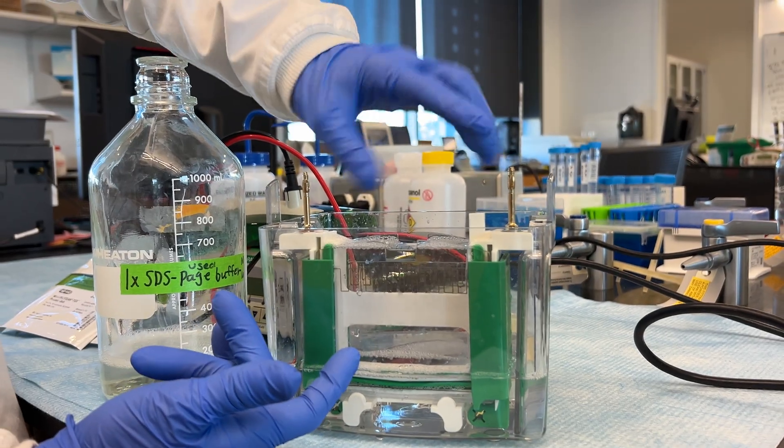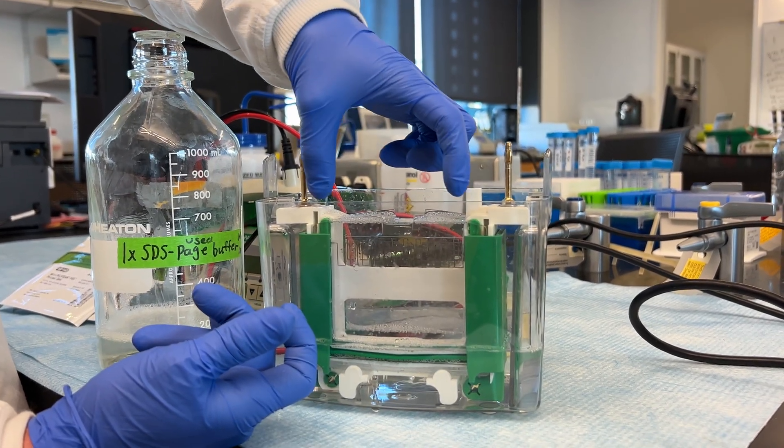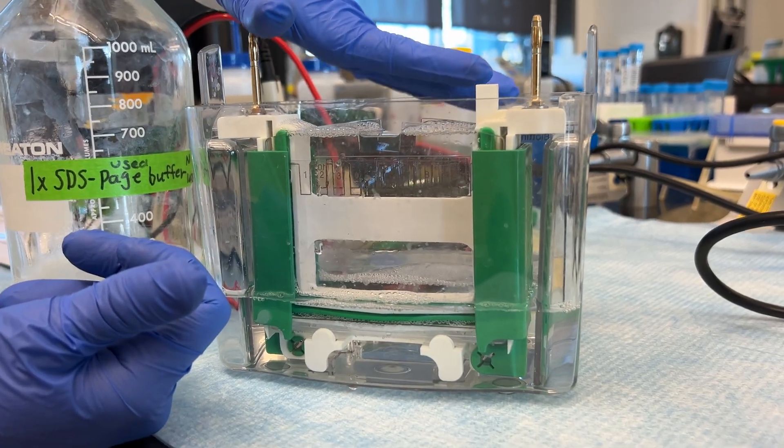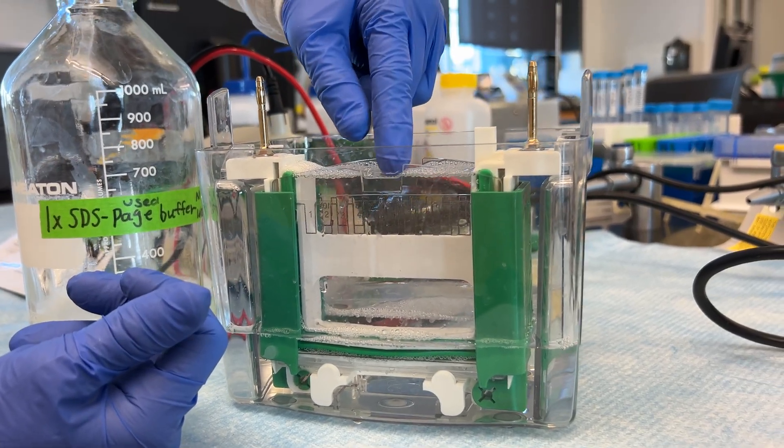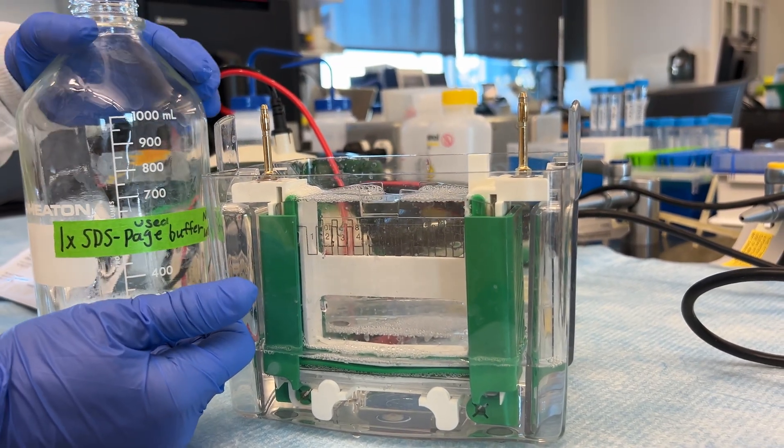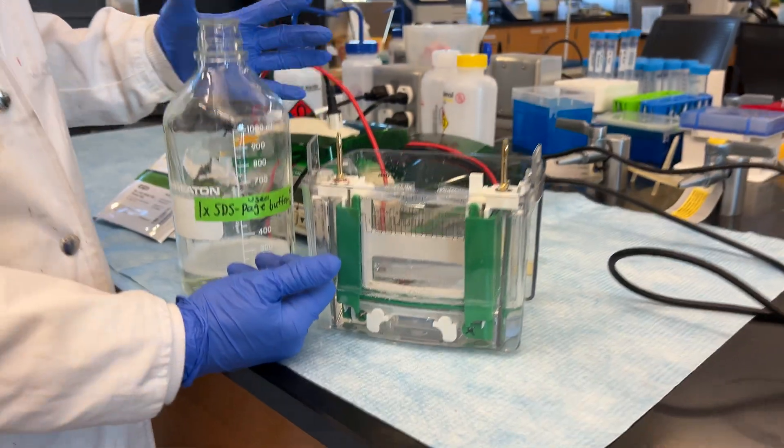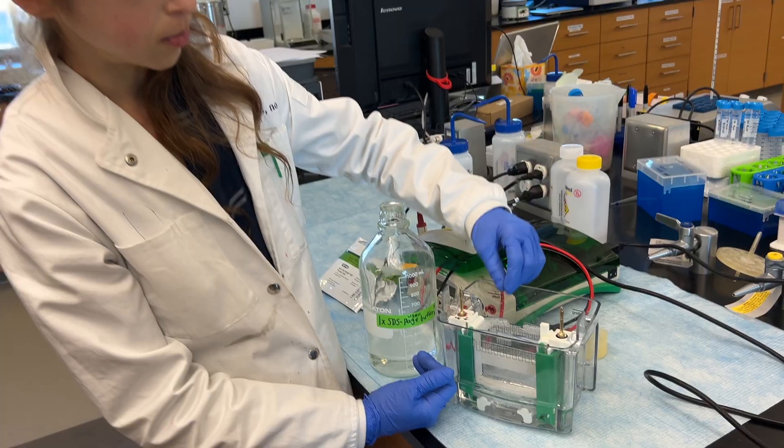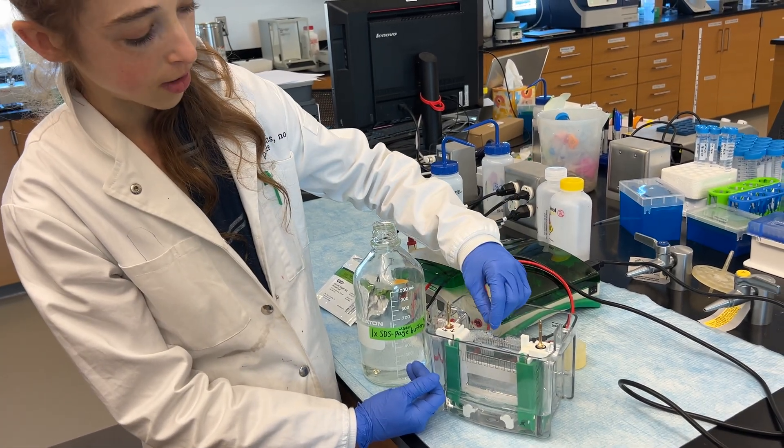And then that's why it's really important that this inner cassette is sealed, because even if you have the same buffer in and out, if this leaks down, then the run is not going to work. You can salvage it if it's running partway and you realize it's leaking. You can pause the run and pour more buffer on the top.